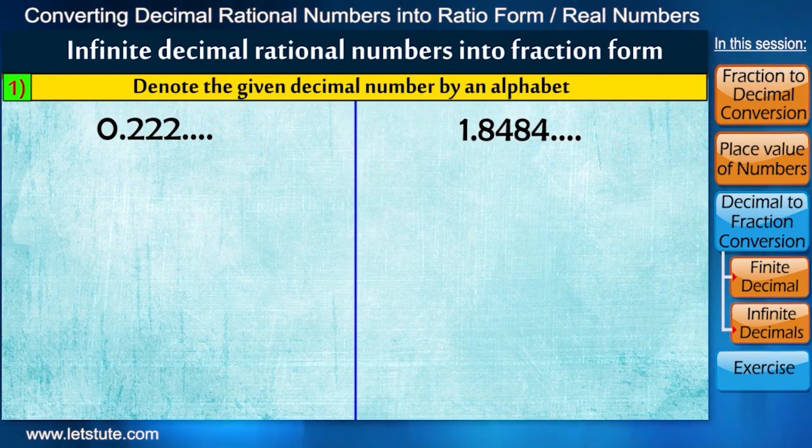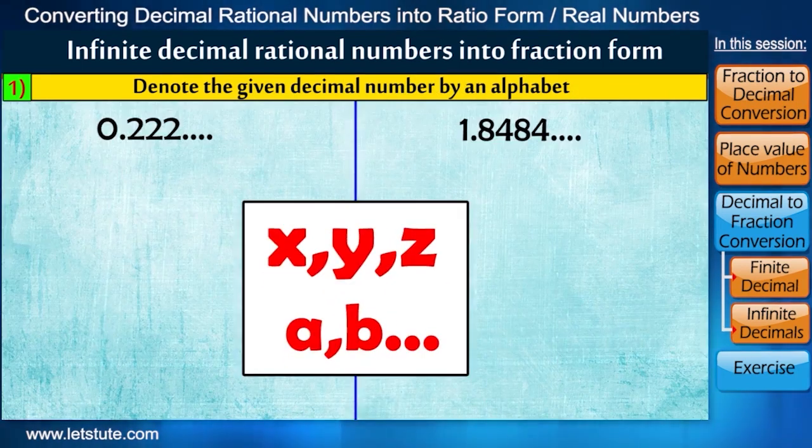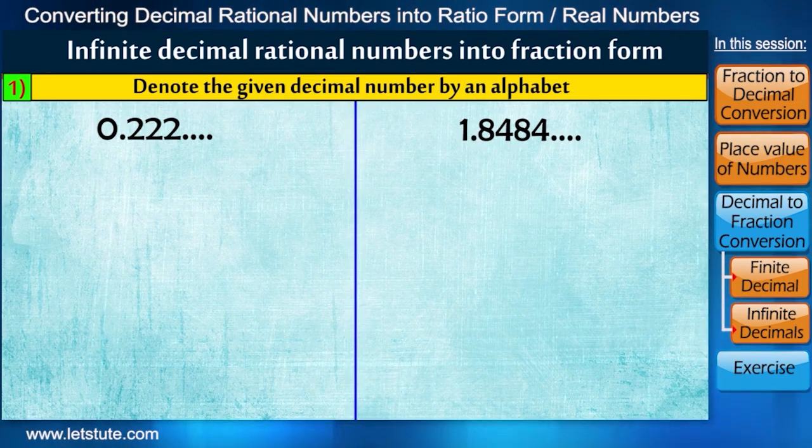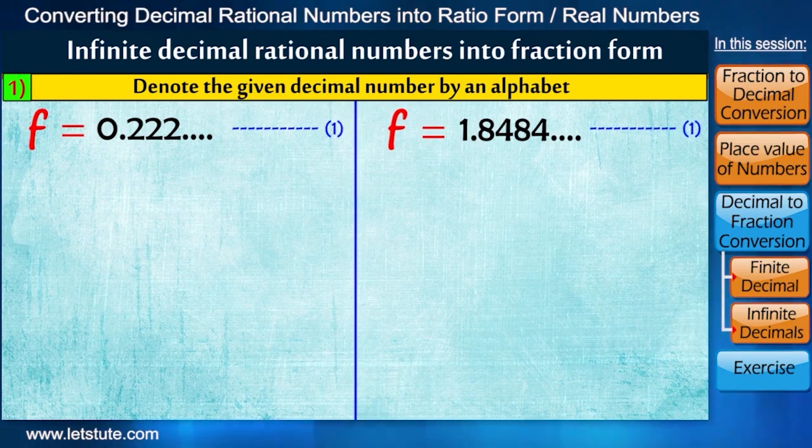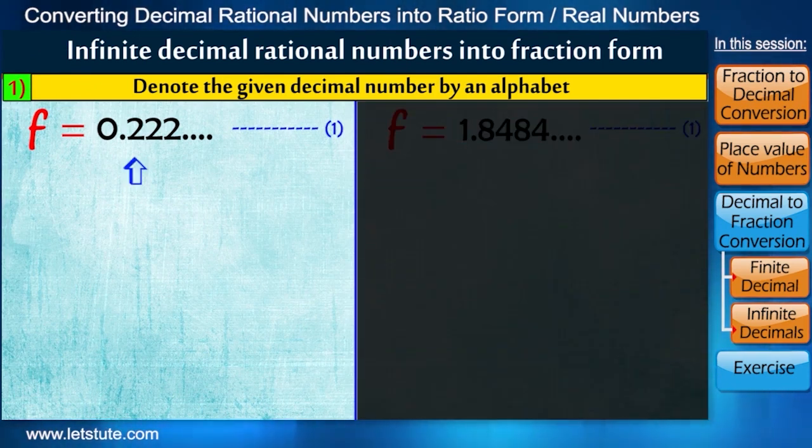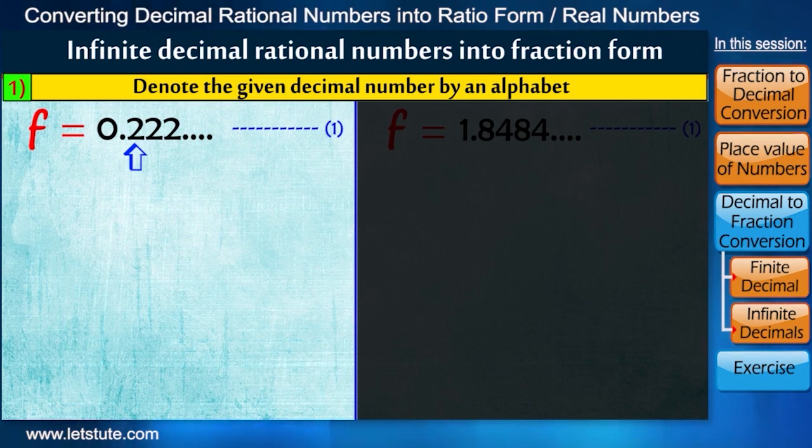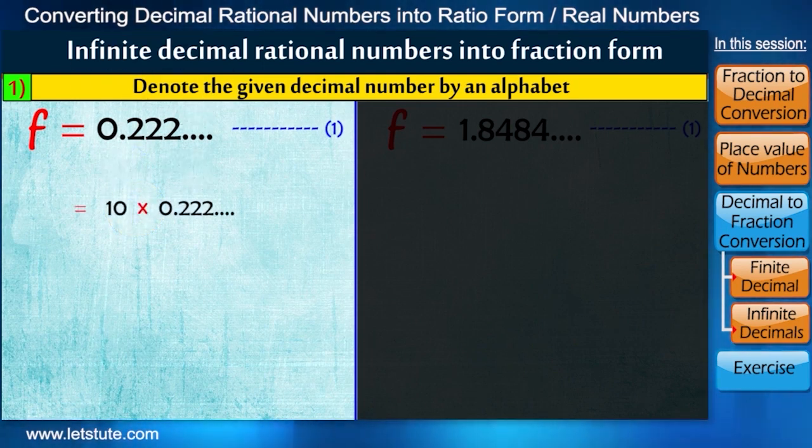So first, we denote it by any unknown alphabet, x, y, z, etc. I'm taking alphabet F for fraction. In the next step, we look at the number of digits that repeat. Here number 2 is repeating. That is only 1 digit. So we shift number 2 to 1 column on the left by multiplying with 10.